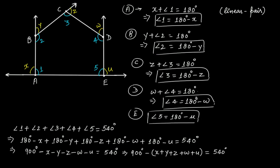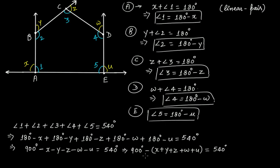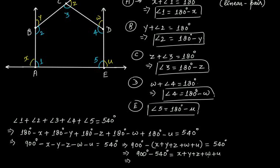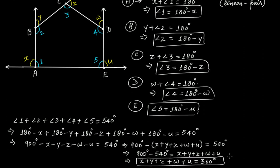Now, if you transpose (X plus Y plus Z plus W plus U) to the right-hand side and 540 degrees to the left-hand side, this becomes 900 degrees minus 540 degrees is equal to X plus Y plus Z plus W plus U. Solving this, X plus Y plus Z plus W plus U is equal to 360 degrees. That is, the sum of the external angles of the pentagon is equal to 360 degrees.